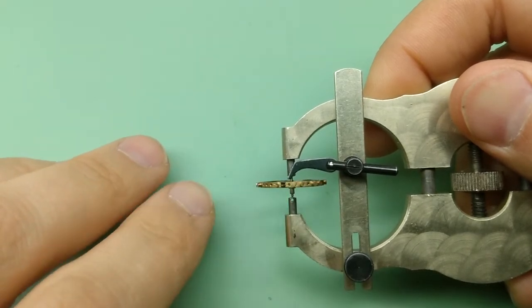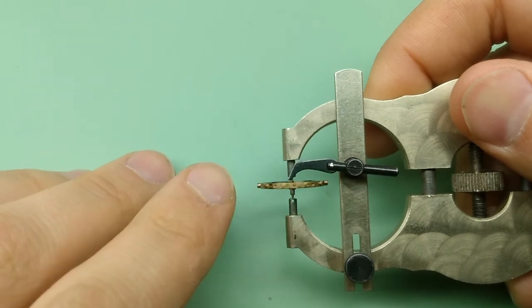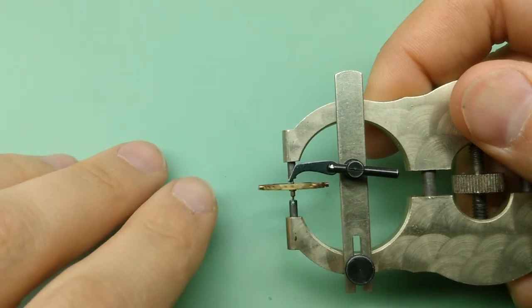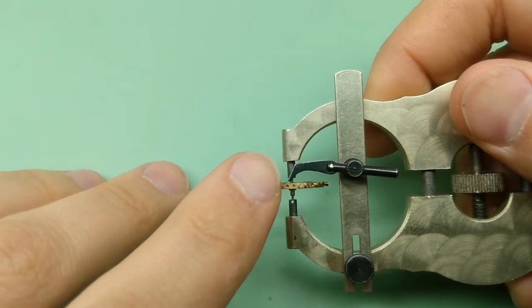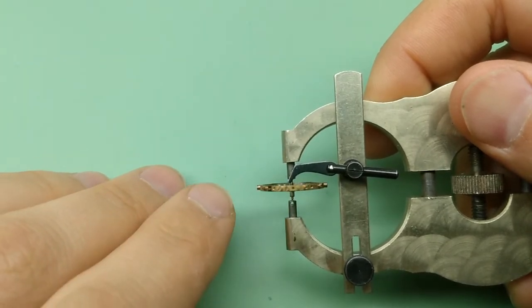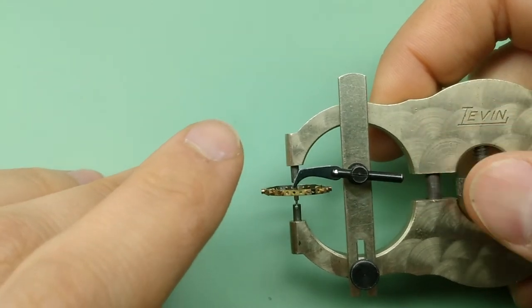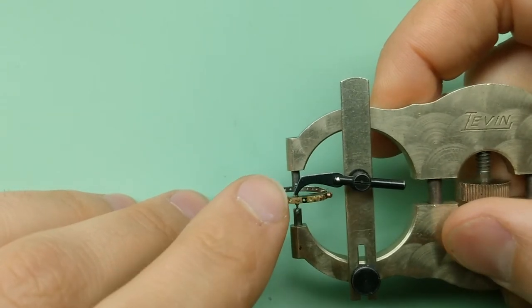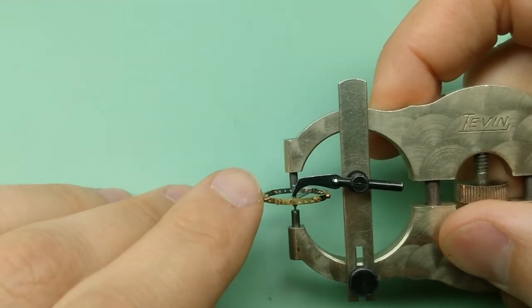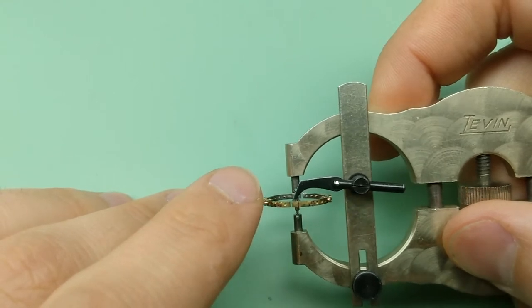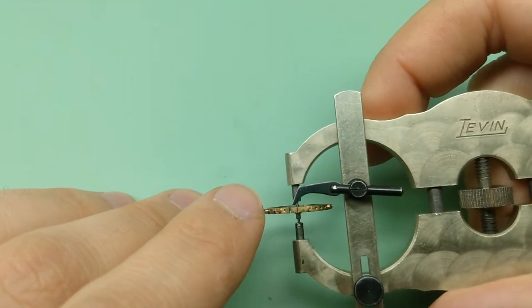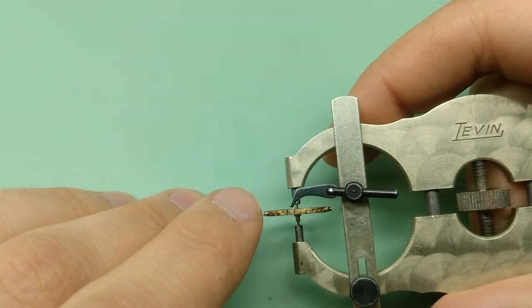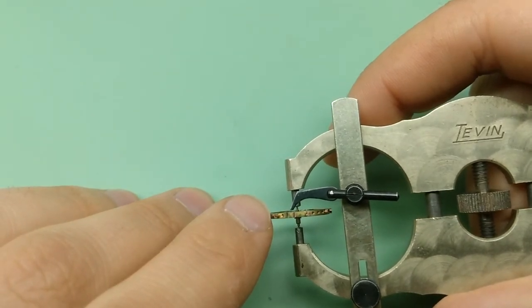And I'm going to compare the height of the rim to the index. However, what I'm not going to do is this. This is not helpful. Fast spinning gives the illusion of flatness or at the very least disguises where any bends are. Instead, what I'm going to do is tighten the tool just a little bit so that I actually have to use my fingers to spin the balance.